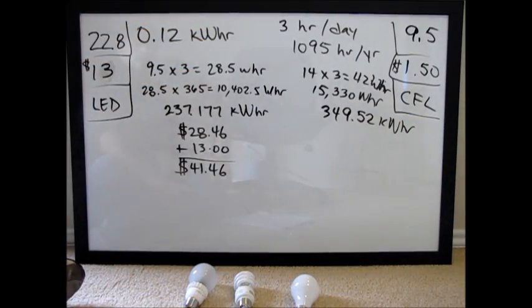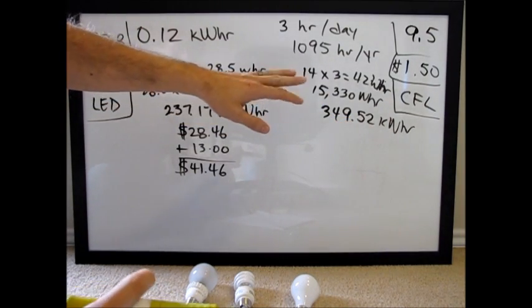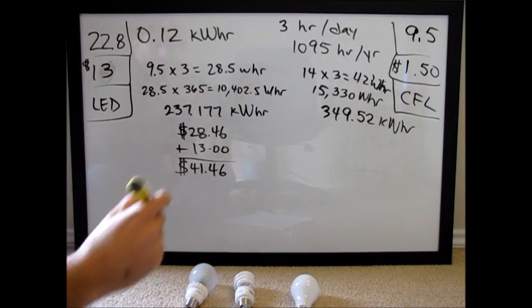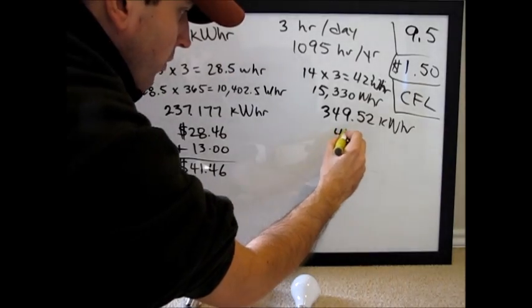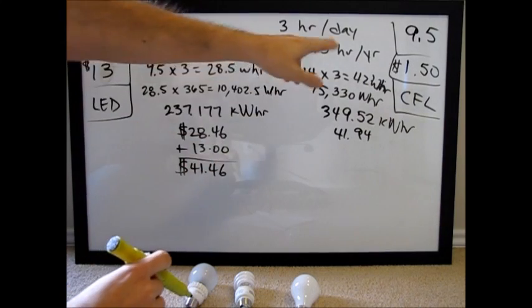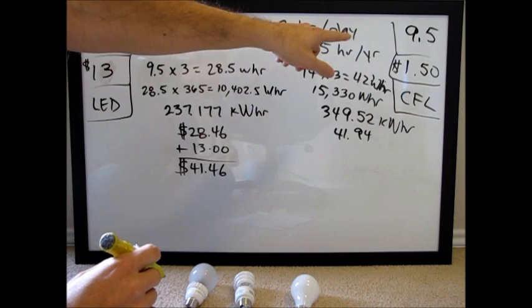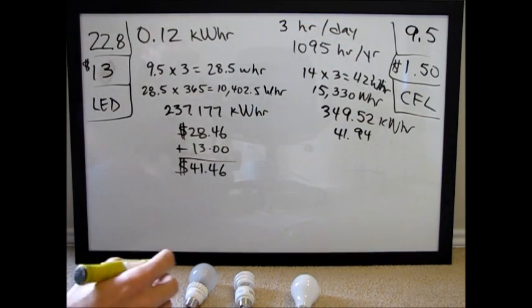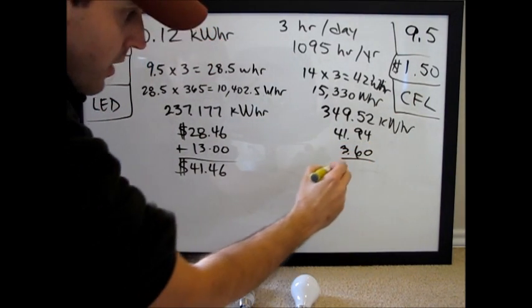Next we're going to take that number of electricity we use over 22.8 years, multiply it by 12 cents, and we get $41.94. However, during the 22.8 years, we're going to replace the bulb 2.4 times, because the bulb only lasts 9.5 years. So we have to account for that, that's an extra $3.60 worth of cost.